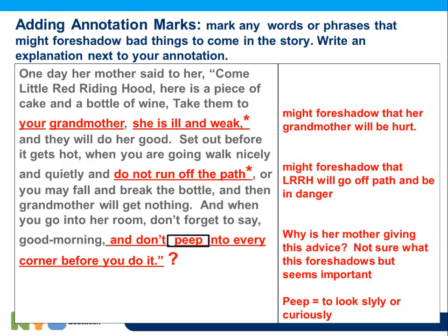Whenever you watch a movie and they say 'here are the rules — don't do this, don't do this, and whatever you do, don't do this number three,' you know before the movie ends the character is going to do number three. Look at the last sentence: 'And don't peep into every corner before you do it.' A person underlined this because they're asking why is her mother giving this advice. I'm not sure, but I think it foreshadows something important. So even if you're not sure why it's important, underline it if you think it's important.